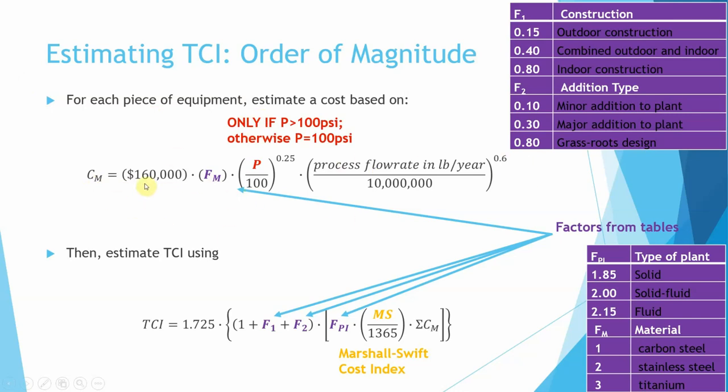To estimate the total capital investment, we're going to treat each piece of equipment, we're going to call it C sub M, and it equals $160,000 times a factor from a table. F sub M comes from a table and has to do with the material from which the piece of equipment is constructed. If you're going to buy a centrifuge made of steel, use this. If it's made of titanium, use this.